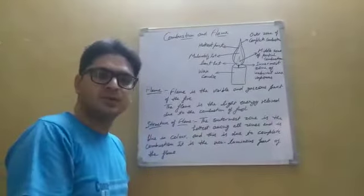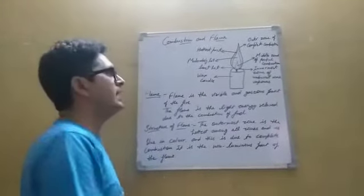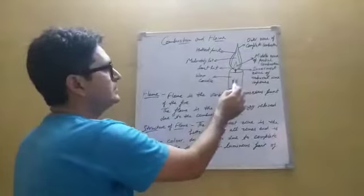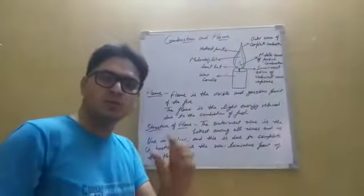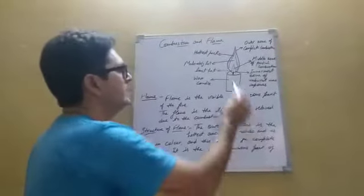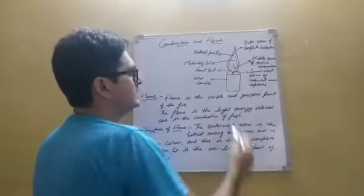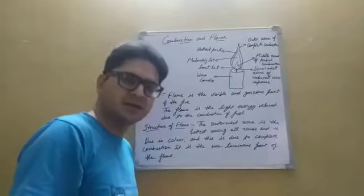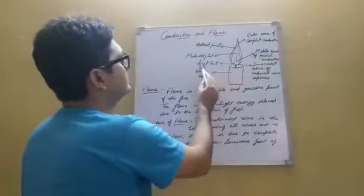The candle diagram is shown here. This is your wax candle, and the flame is visible. We are discussing the parts of the flame. The least hot part is where the wick is located, where it burns.